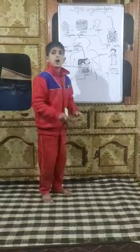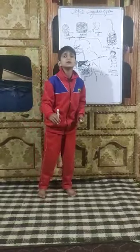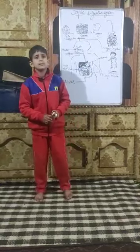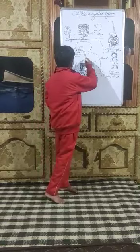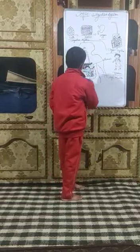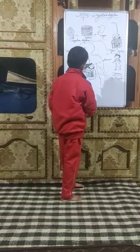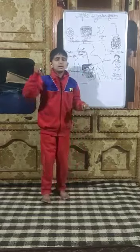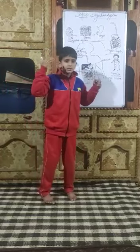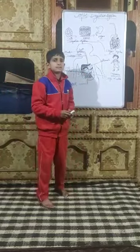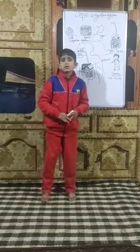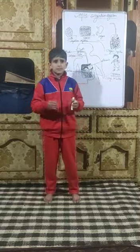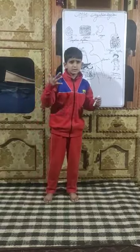What is a digestive system? The organs that help food be digested make up the digestive system. It is the process in which food changes into simpler forms.